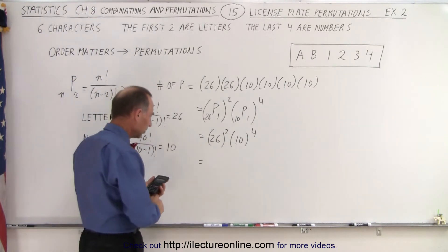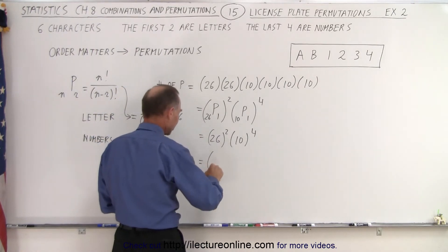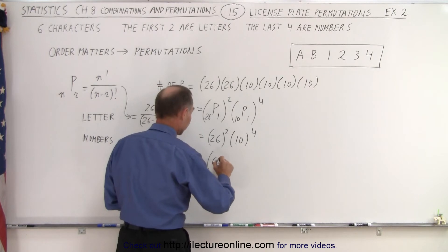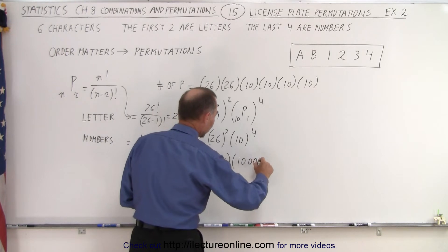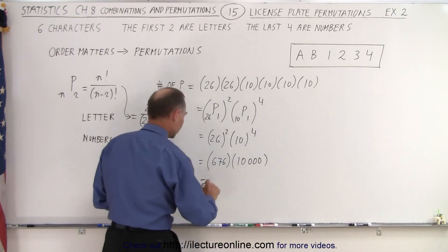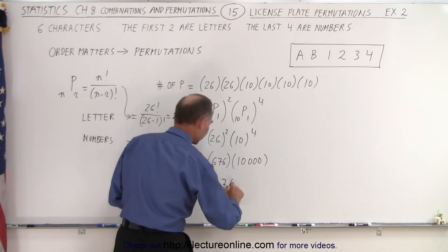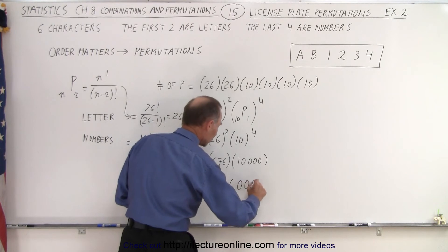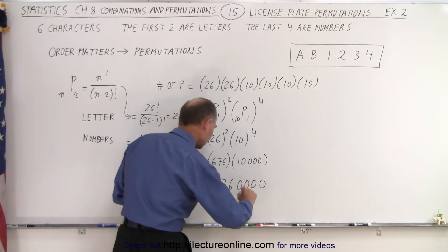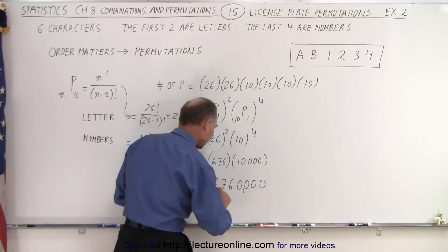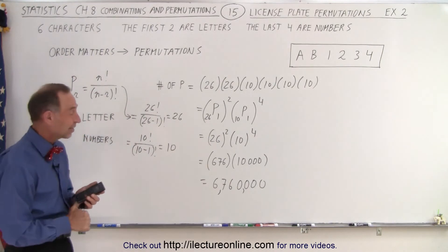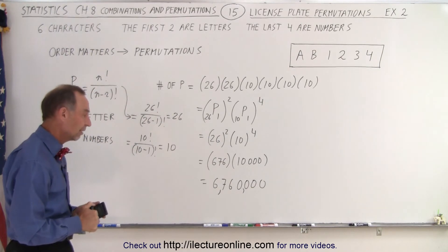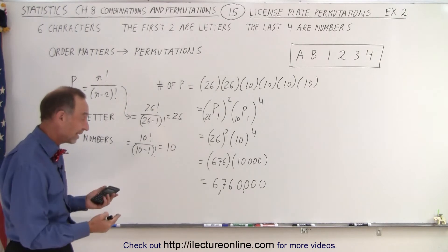26 squared gives us 676 different permutations for the first two characters. 676 times 10,000 equals 6,760,000 — that's 676 with four zeros. So this scheme gives us only 6,760,000 total permutations.